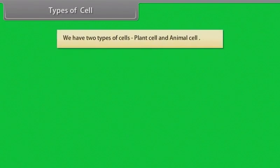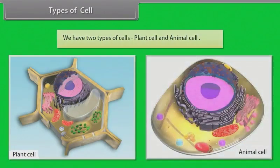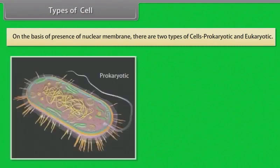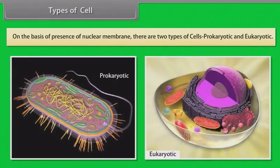There are two types of cells: plant cells and animal cells. On the basis of presence of a nuclear membrane, there are also two types of cells: prokaryotic and eukaryotic.